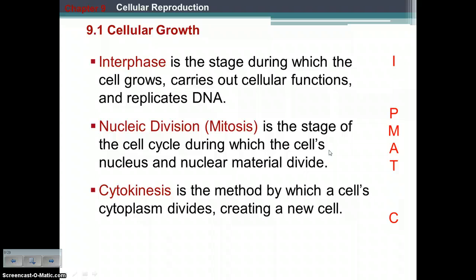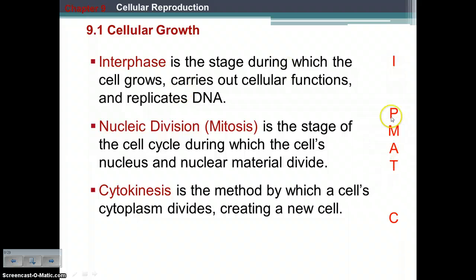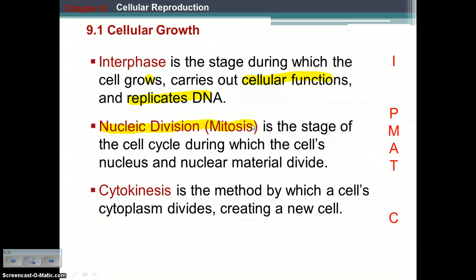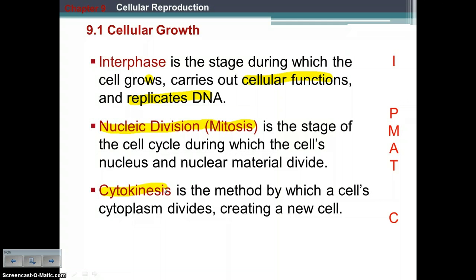Remember this phrase: IPMATC. I is referencing interphase. PMAT represents the stages of mitosis — prophase, metaphase, anaphase, and telophase. And C is cytokinesis. In interphase, the cell is carrying out normal functions, growing, moving things in and out via the cell membrane, and the DNA is being replicated. Then you have mitosis, where the nucleus and all of its contents divide. Last up, cytokinesis is the cutting of the cell — the actual division of the cytoplasm — resulting in two new, entirely separate cells.